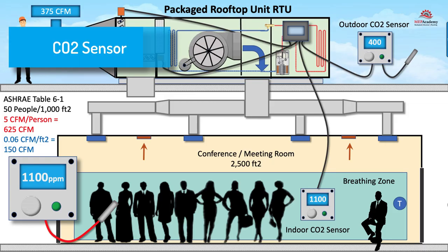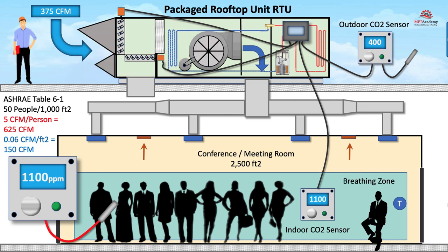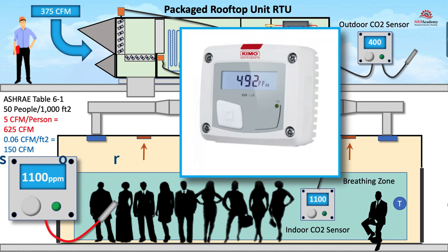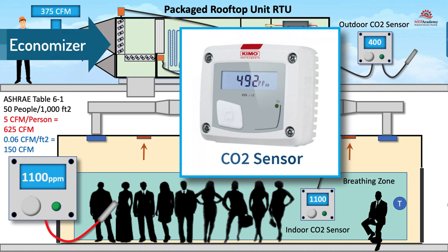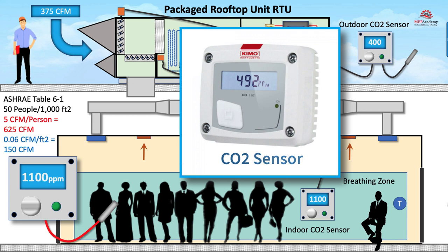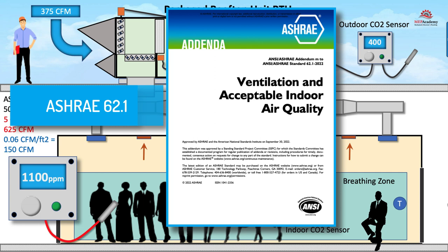CO2 sensors. Carbon dioxide CO2 sensors are used to monitor indoor air quality and ensure adequate ventilation. They are often placed in areas where people gather, such as conference rooms, classrooms, and auditoriums. CO2 sensors, when integrated with economizers, play a vital role in controlling ventilation air to a room based on the levels of CO2 present in the indoor environment. The CO2 sensor continuously measures the concentration of carbon dioxide in the air. Based on building codes and standards such as ASHRAE Standard 62.1, there are recommended or required ventilation rates for occupied spaces. These rates are designed to maintain healthy indoor air quality.